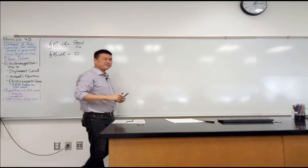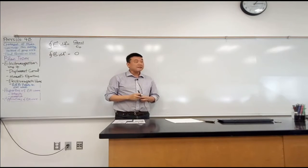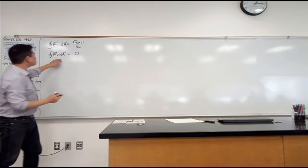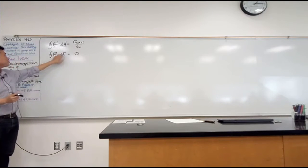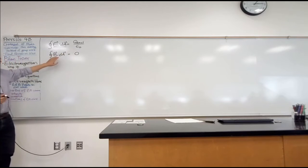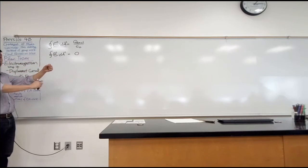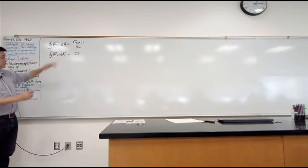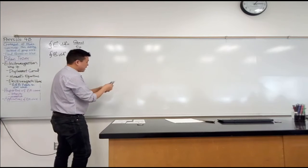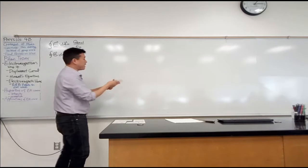Does anyone remember why it's equal to zero? The way to understand flux is to look at how many field lines are going through a surface. So what this is saying is, let's say I have some field lines in space — can you believe these represent electric fields? What kind of source generates electric fields that look like this?